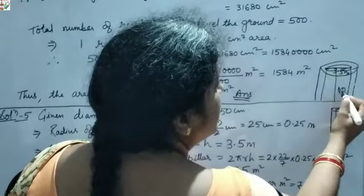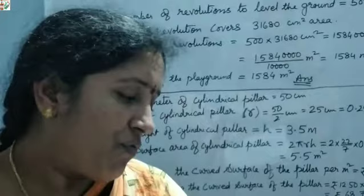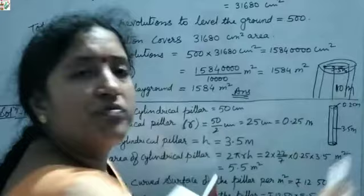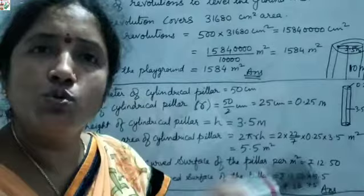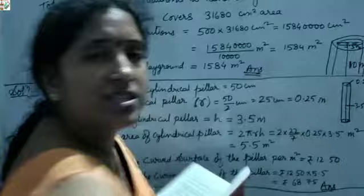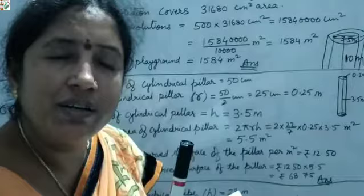Depth H = 10 m. Find the inner curved surface area. Radius R = 3.5 ÷ 2. Both measurements are in meters so no conversion is needed. With R and H known, find the curved surface area using 2πRH.